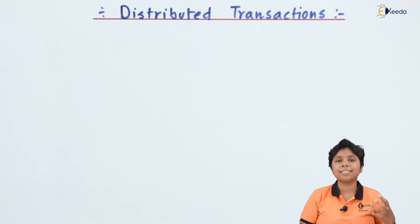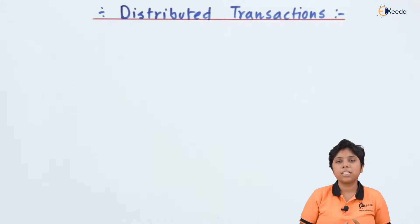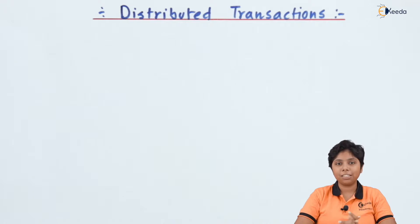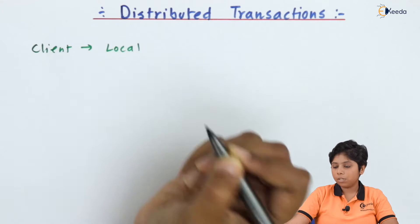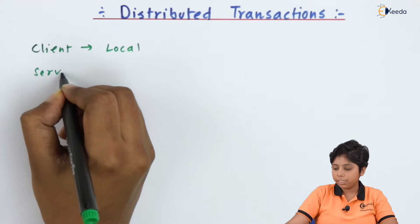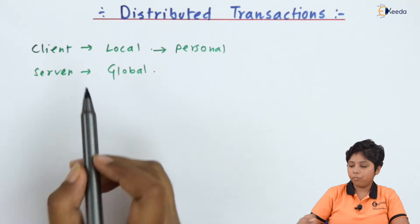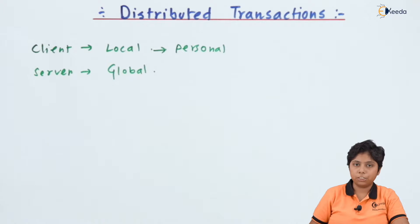While the client is initiating some transaction, it may be required to go to the server side, so the transaction needs to be performed at the server side and then get the result back. When the client initiates a transaction it has a local transaction state, so the client initiates a local transaction while the server, when it gets these transactions, treats them as global transactions.